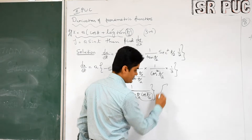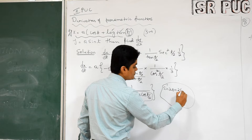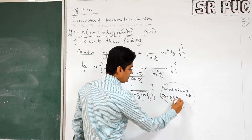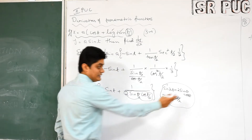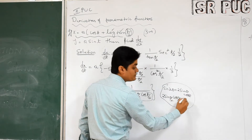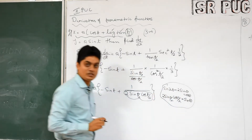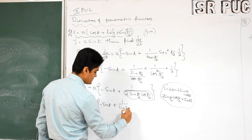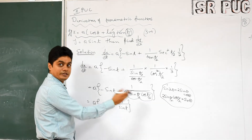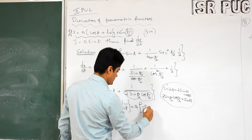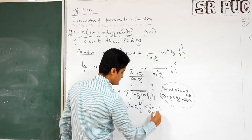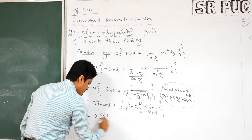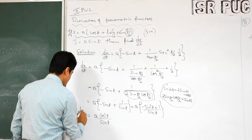Recognizing the sin double-angle formula: 2·sin(θ/2)·cos(θ/2) = sin(θ). So 2·sin(t/2)·cos(t/2) = sin(t). Therefore dx/dt = a·[minus sin(t) + 1/sin(t)] = a·[(1 minus sin²(t)) / sin(t)] = a·cos²(t) / sin(t). This is the required dx/dt.